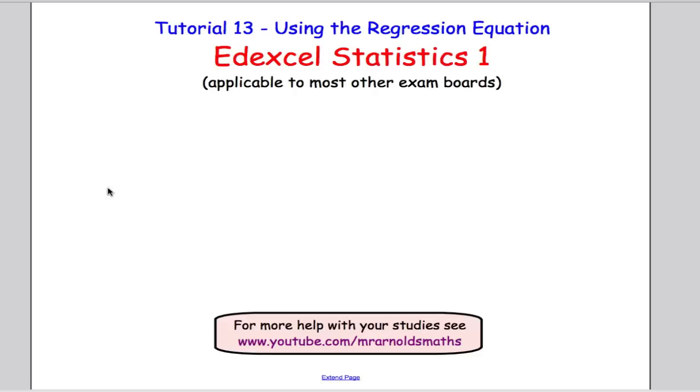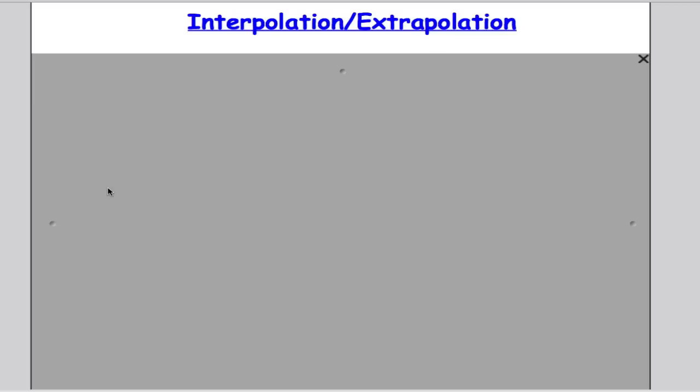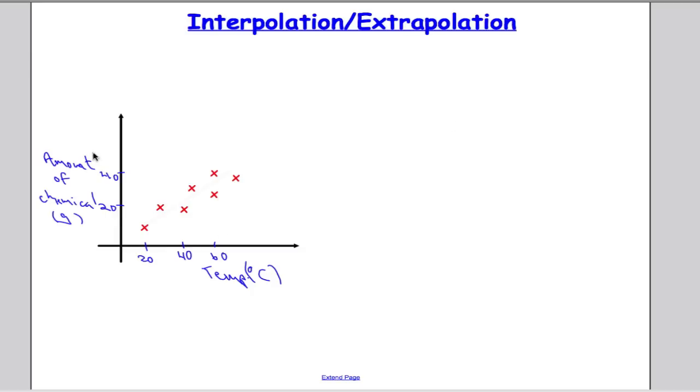Right, so I just want to talk briefly about interpolation and extrapolation using regression. So suppose we did an experiment and we see that there's a linear regression between the amount of chemical that's produced and the temperature. So as we increase the temperature we can see it seems that we get more chemical produced. And then we could work out the regression line because it looks like there's a linear relationship. Now this is not interpolation in the sense of what we've been doing previously with medians and quartiles, it's interpolation using the regression line.